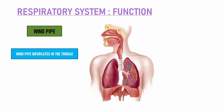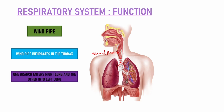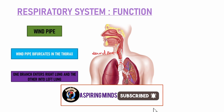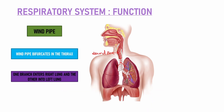Hamare throat mein ek swollen structure hota hai — woh swollen hai because of the presence of the sound box. Wind pipe ke upar sound box present hota hai. After it enters into the thoracic cavity, woh bifurcate hota hai into two parts — left and right tak jaata hai, woh dono lungs tak jaata hai. Ek branch right lung ke paas jaata hai, doosra branch left lung ke paas jaata hai. So wind pipe ke upar sound box hota hai, then woh bifurcate hota hai — divide ho jaata hai — and one branch enters the right lung and another branch enters the left lung.